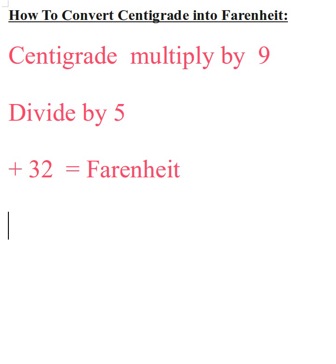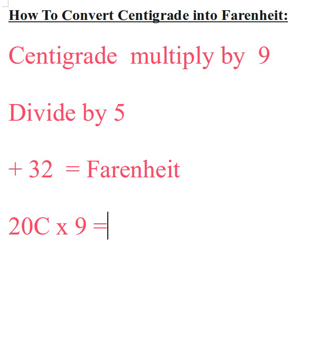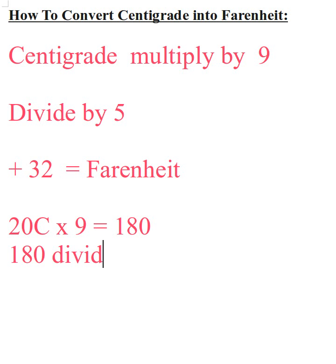For example, if it is 20 degrees centigrade, you multiply 20 by 9, which gives you 180. You then divide 180 by 5, which gives you 36.